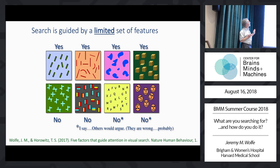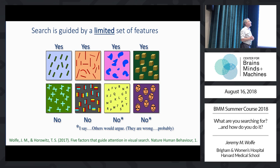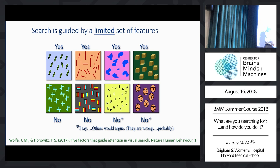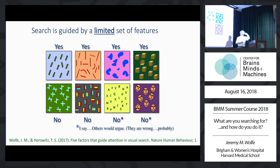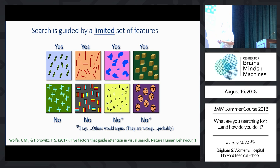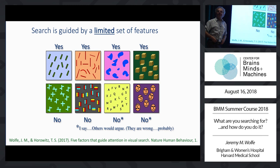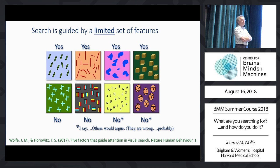It seems useful to say that those guiding features are probably not the four-thousand-dimensional feature vector you get out of your favorite neural network. Those are features terrific for object recognition but not what you're using when guiding your attention. The features that you do have are things like orientation, curvature, something about shape, and some fairly advanced things like lighting direction or the 3D layout of objects.